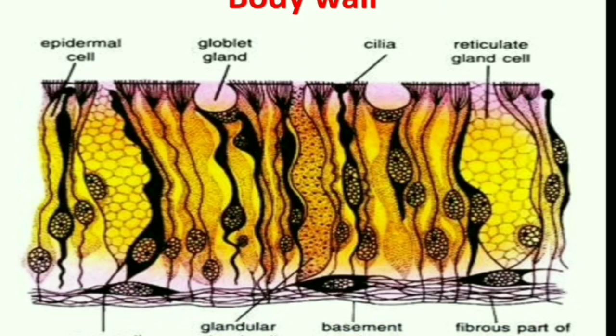The body wall of Balanoglossus consists of several layers: epidermis, a nervous layer just below the epidermis, then a basement membrane and musculature. It is not covered by cuticle, which is why the body is very soft and fragile — larger specimens easily break down when handled.